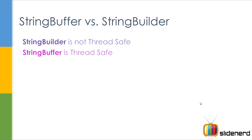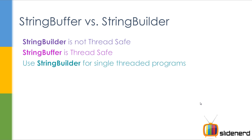String Buffer is thread safe — that means everybody has their own bottle of beer. Only one person is allowed data access inside the String Buffer at a time; it is synchronized. In short: when you have a single thread, use String Builder — it is the highest and fastest in terms of performance. When you have many threads trying to access data, use String Buffer. String Builder is the most efficient, but you decide based on your use case.